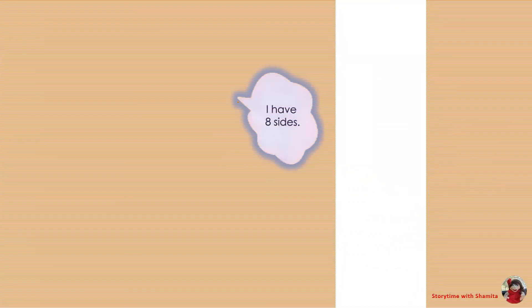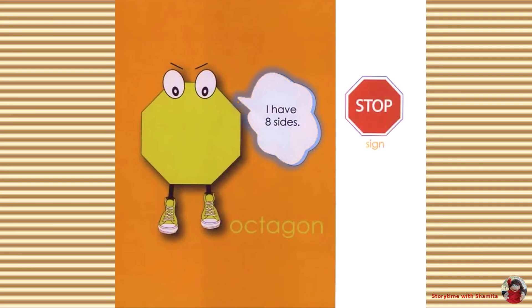I have eight sides. Octagon. Examples: sign, trampoline.